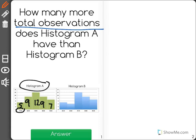So, what I'll do now is I'll add all of these together and that will give me the total number of observations in histogram A. When I add all of those together, I will get a total of 42.